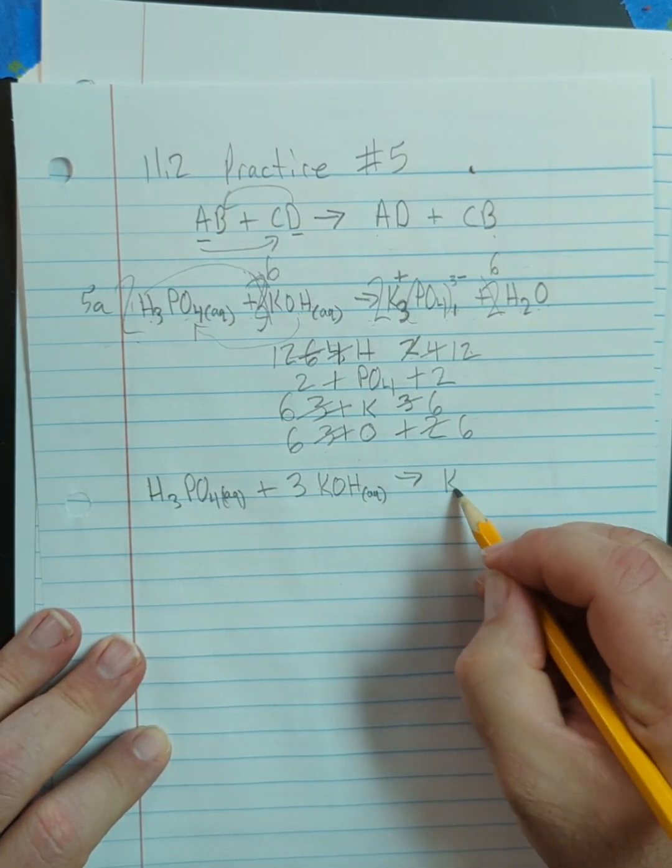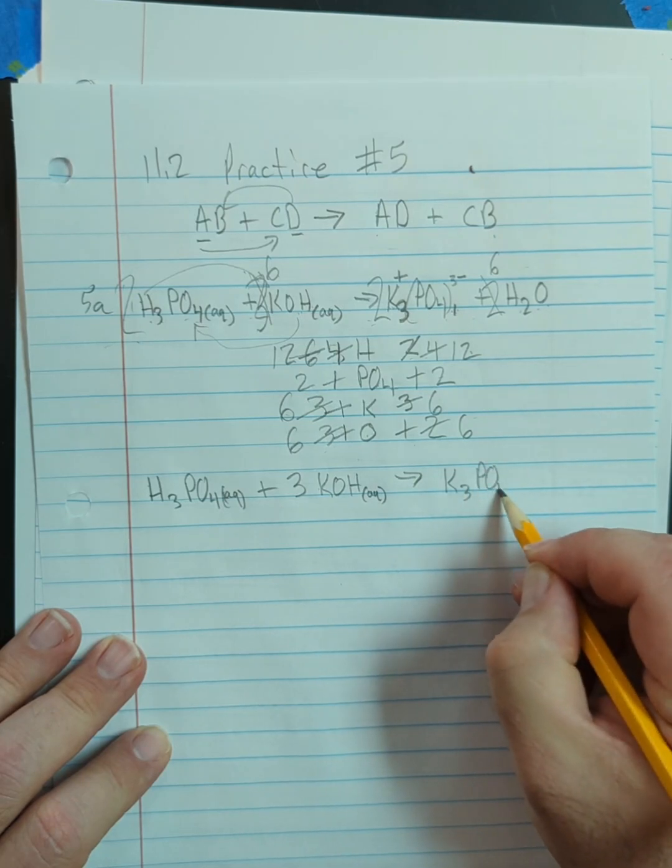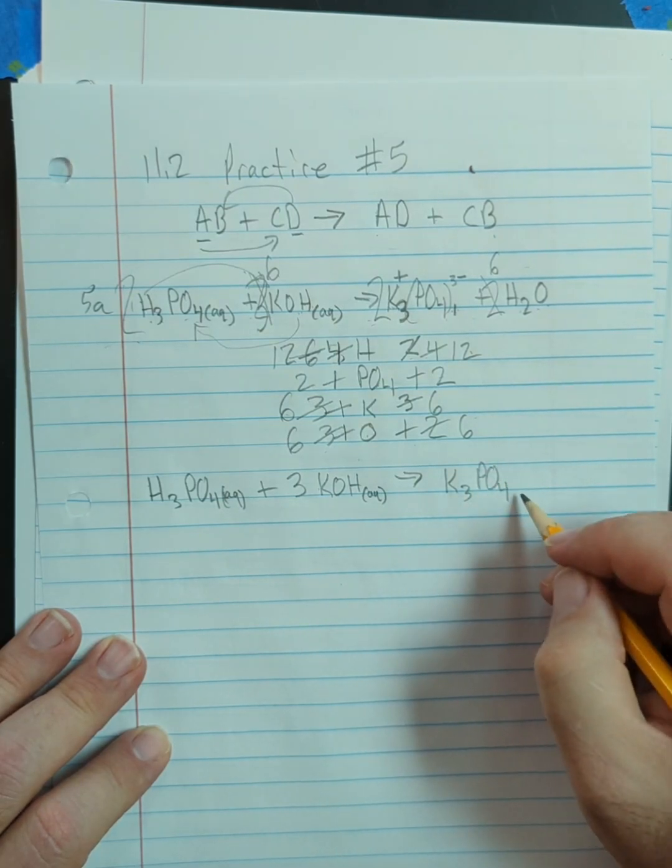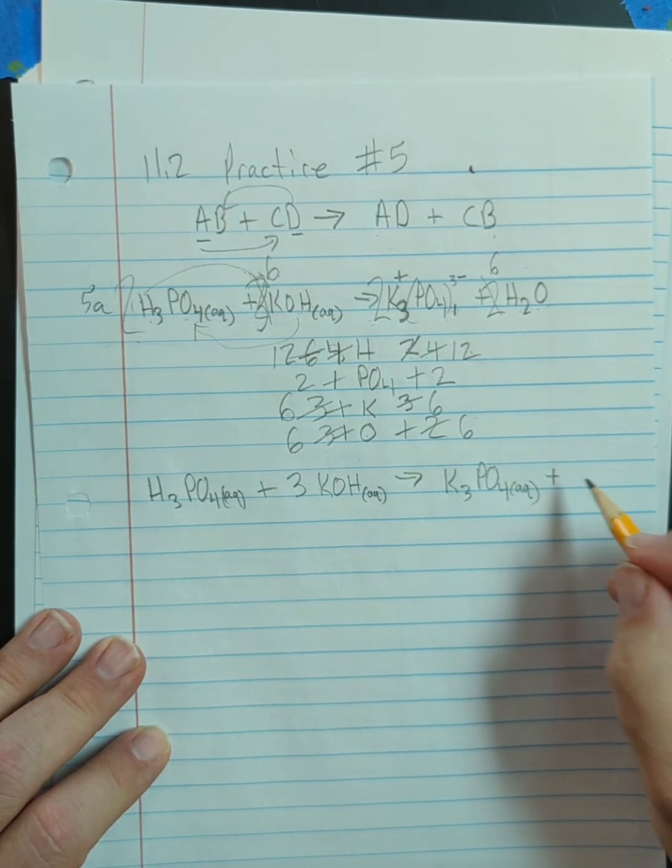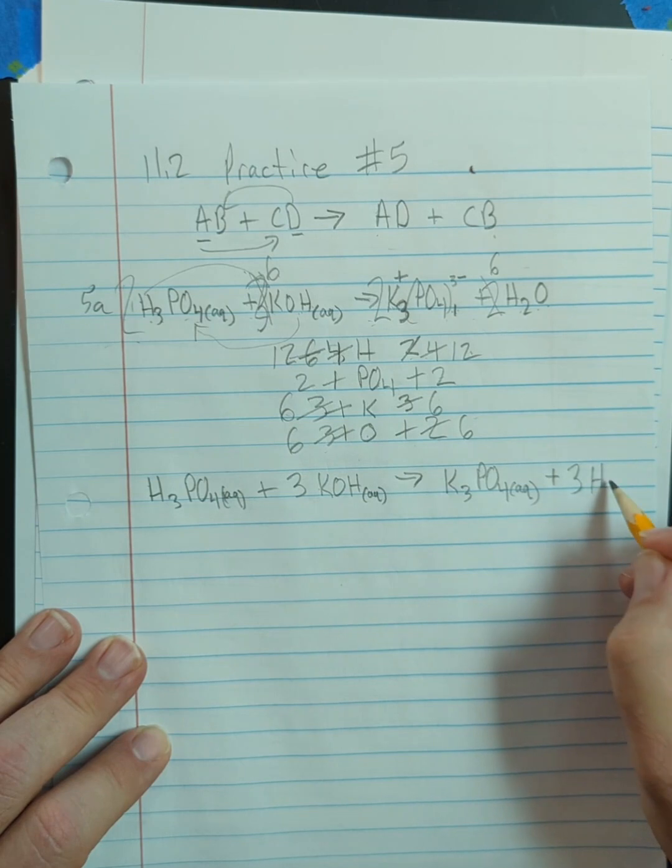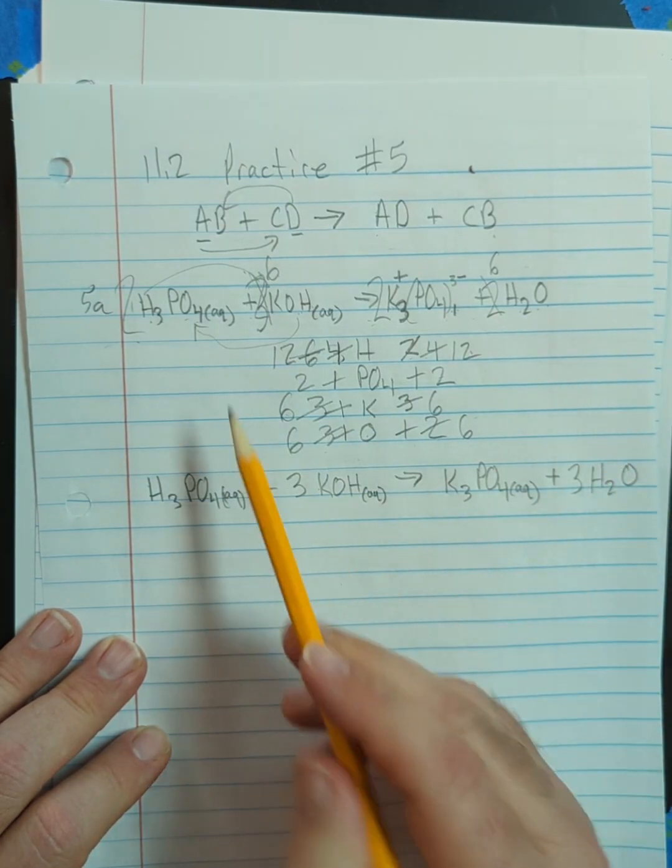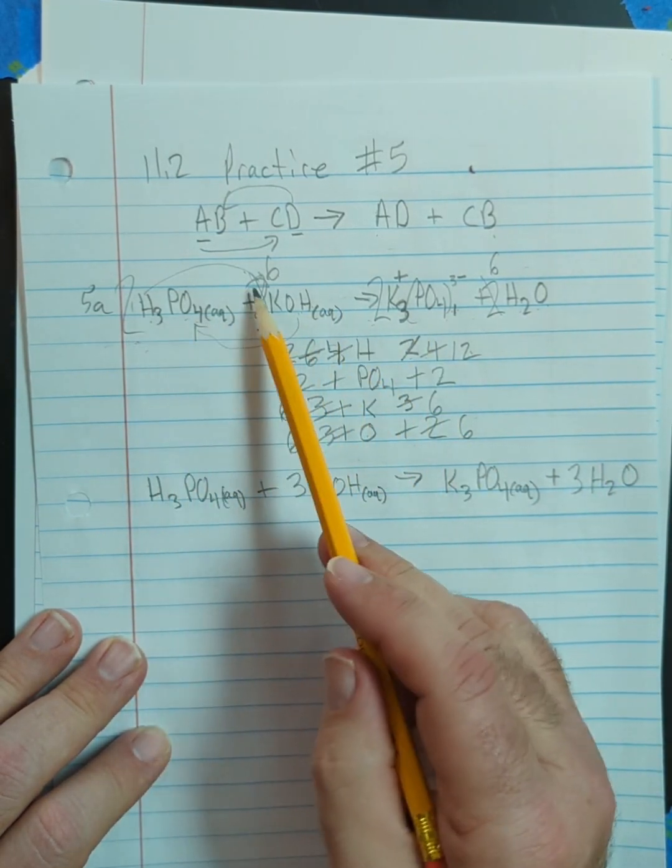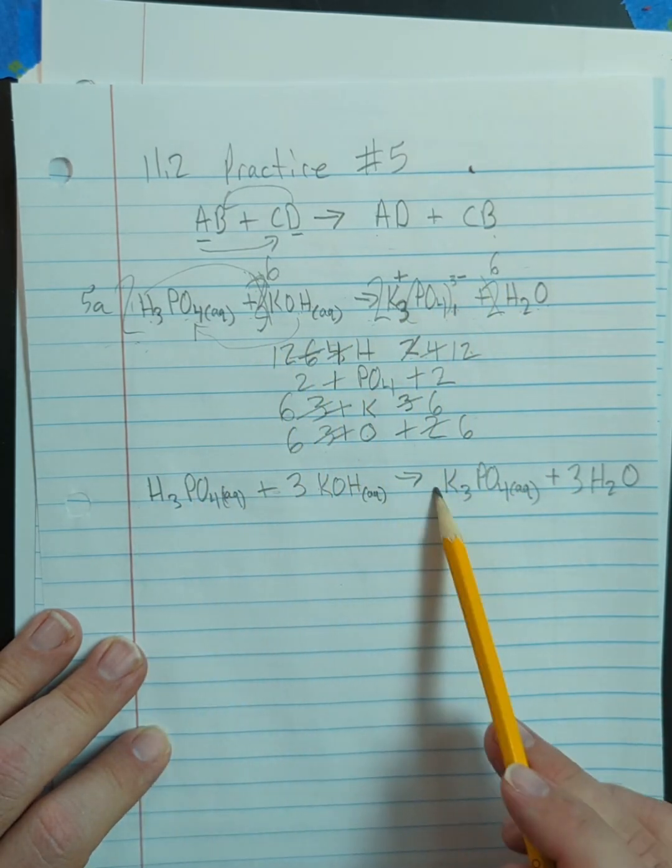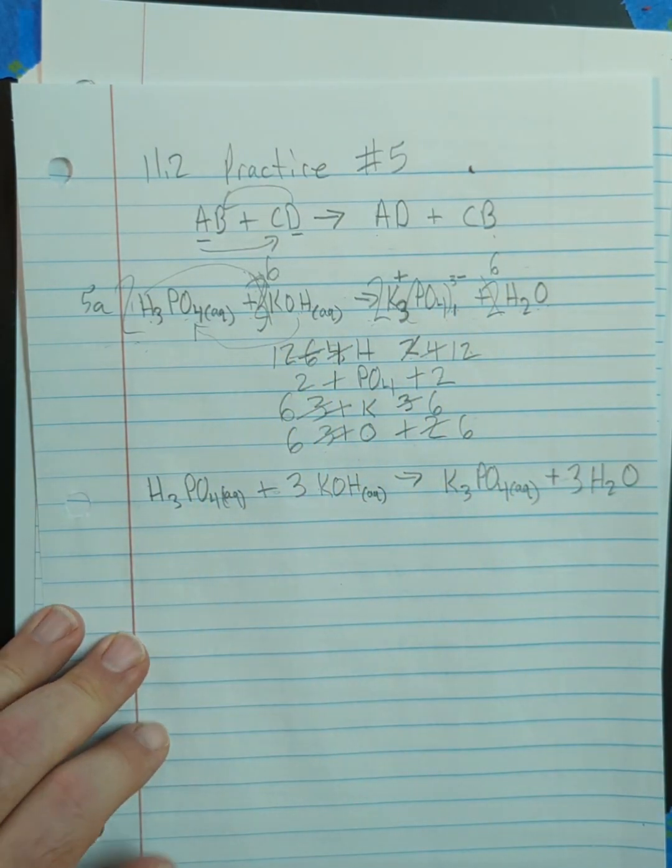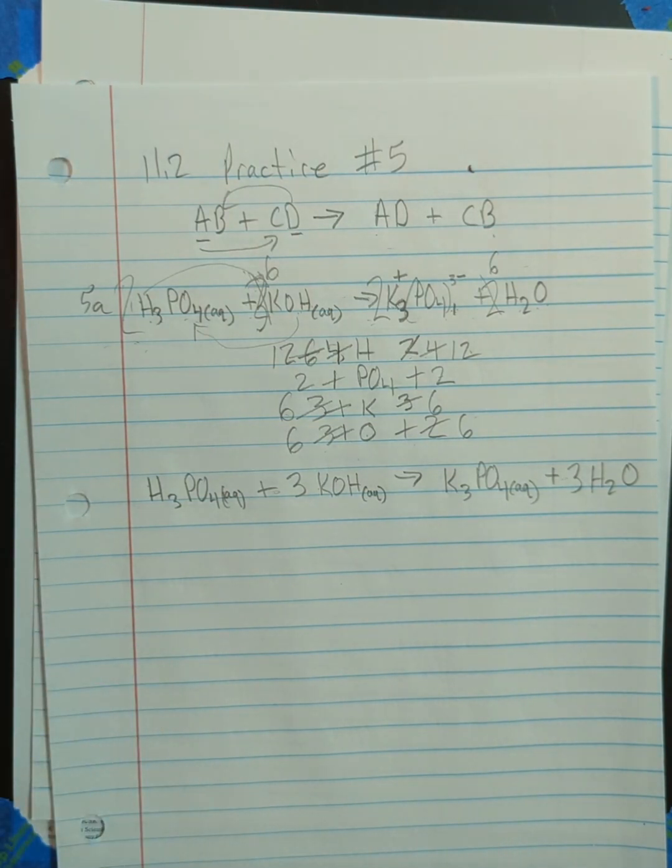producing one molecule of K3PO4 aqueous, plus three molecules of H2O. Notice this is the same ratio, two to six to two and six. This is one to three, one to three. So it's the same ratio. We just simplified the coefficients. All right, so let's look at 5B now.